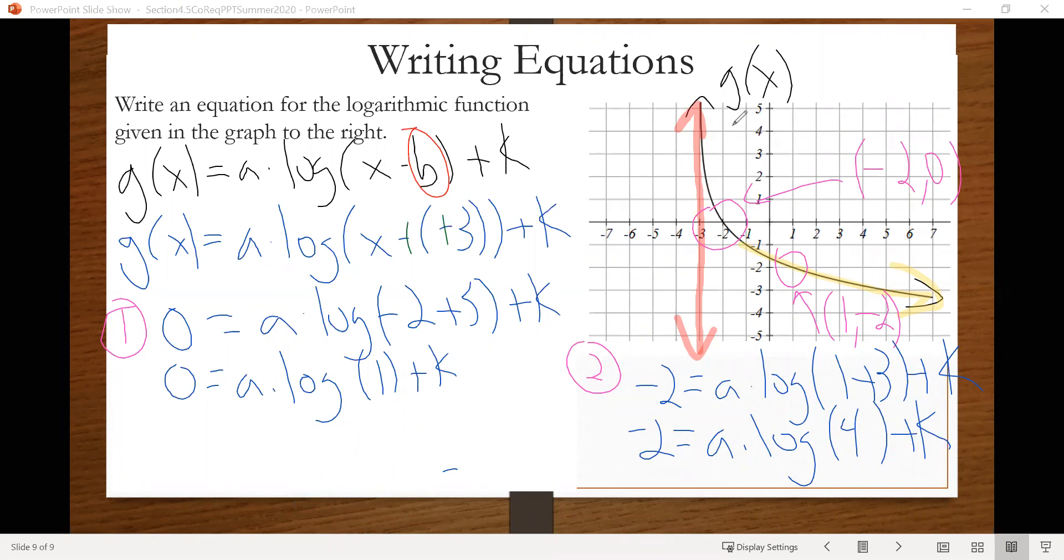So we can rewrite our equation then as 0 equals a times 0 plus k. But a times 0 is just going to give us 0. This is like 0 plus k, which just gives us k. So then we know that the value for k there is just going to be 0. So we get k equals 0.